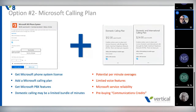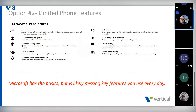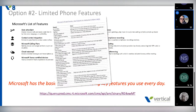Just like the other option, there are shortcomings. There are potential permanent overages, limited voice features, and some service reliability issues. Microsoft is not great at voice — it's never been one of their core competencies. Here's the list of Microsoft phone features: it's one page. For those of us who've been in the communications world a long time, most phone systems present feature lists that go on for pages. That's Microsoft's whole list because this isn't their core competency — it's something they've added on.